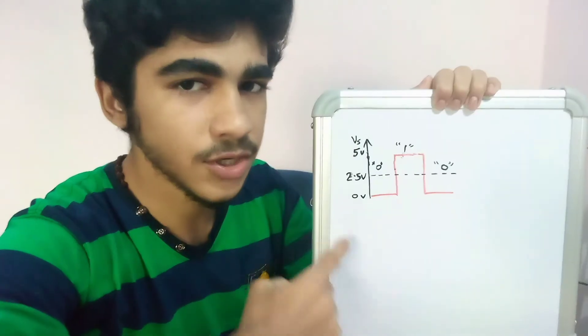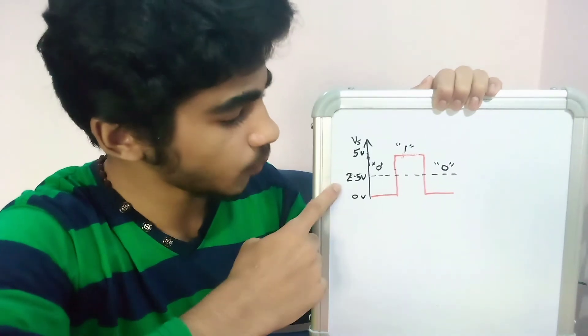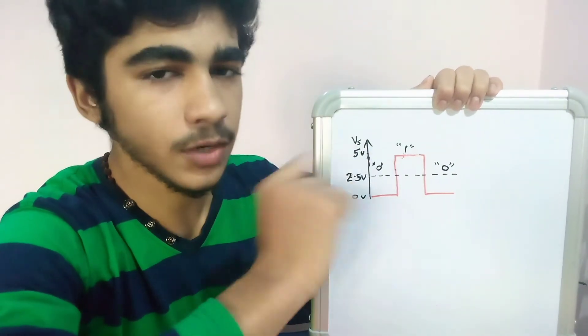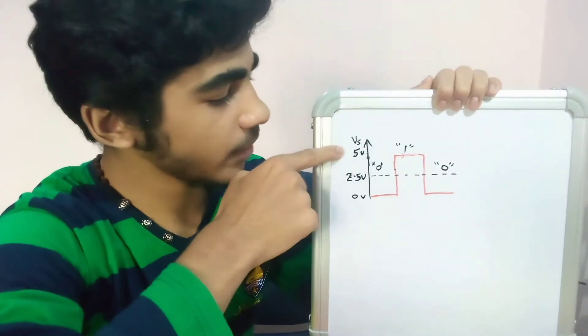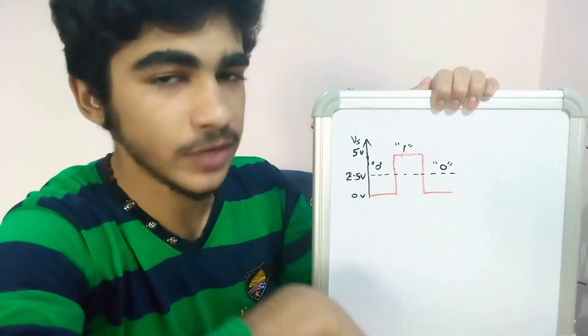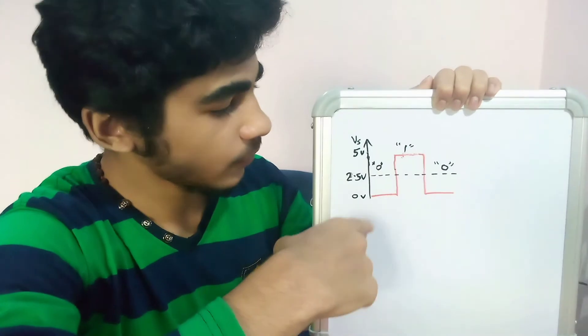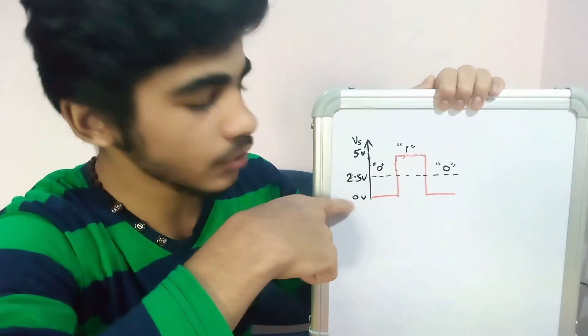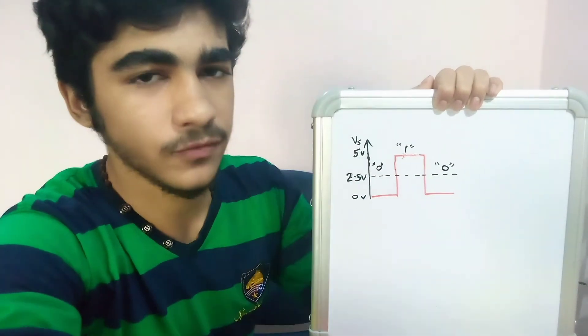So for better noise immunity, we want lots of noise margin. Here the noise margin is 2.5V. For binary 1, it is from 5V to 2.5V, and for binary 0, it is from 0V to 2.5V. I chose 2.5V as the noise margin because it has better noise immunity than any other value.